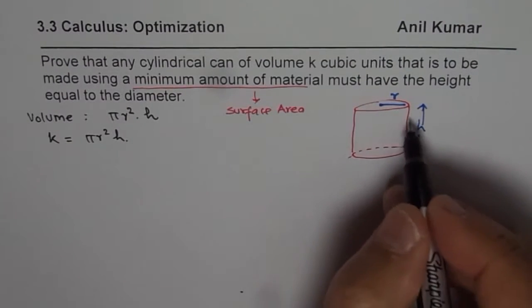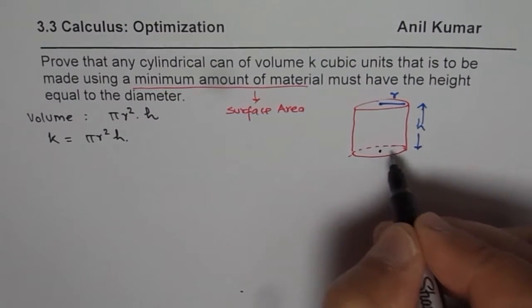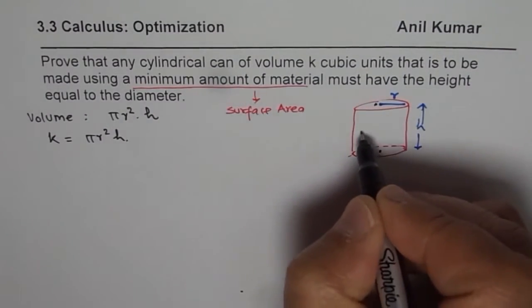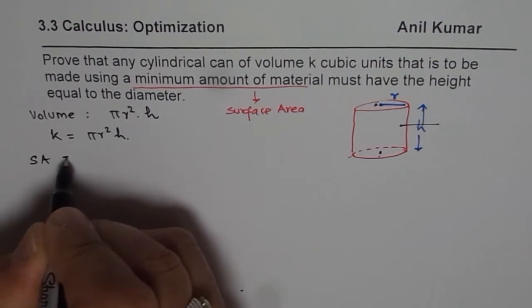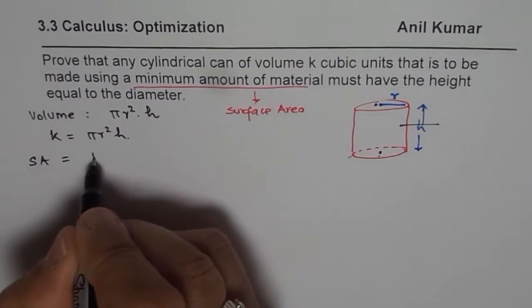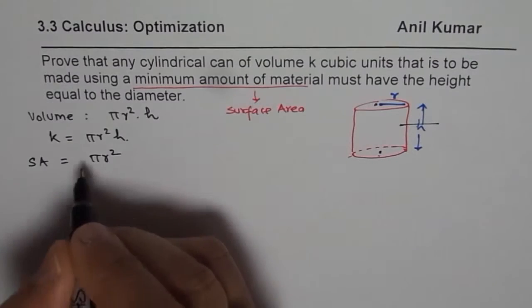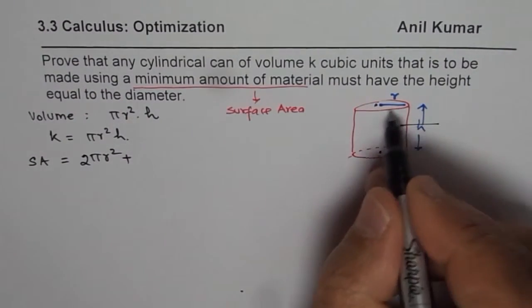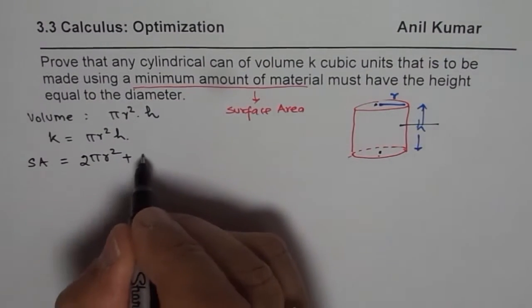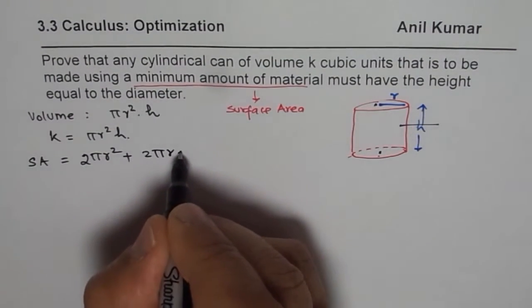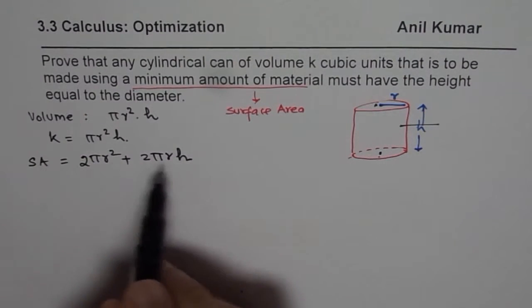Now what is the surface area for a cylindrical can? It has three surfaces: top, bottom, and the lateral surface. So surface area equals πr² for the top plus the same at the bottom, giving two πr², plus the lateral area which is two πr (circumference) times height. That becomes the surface area which we need to minimize.